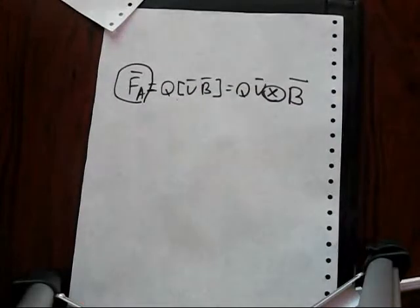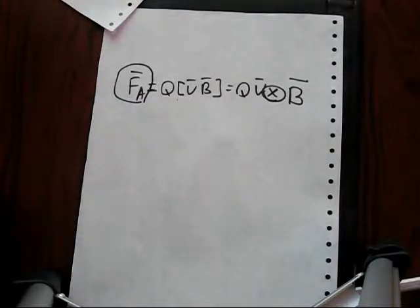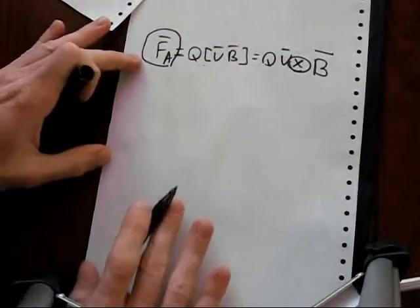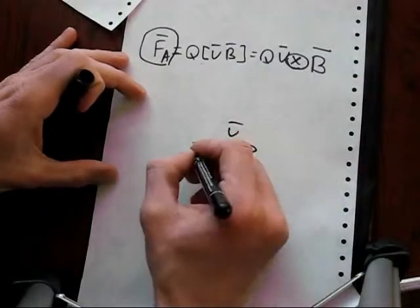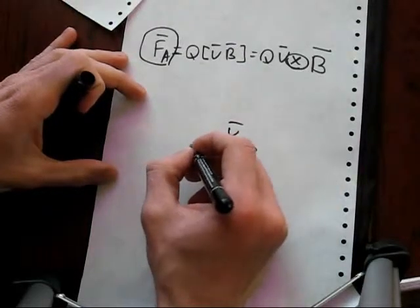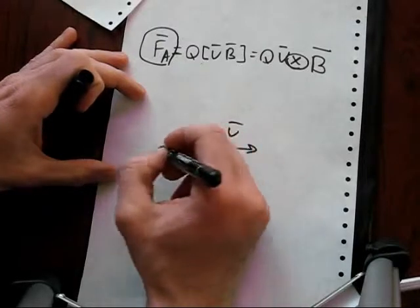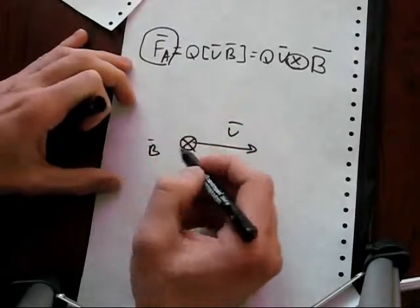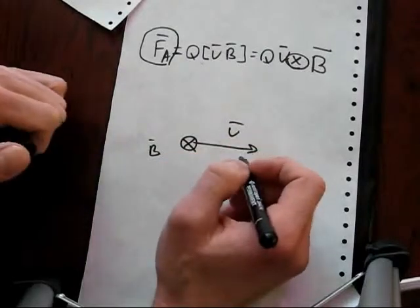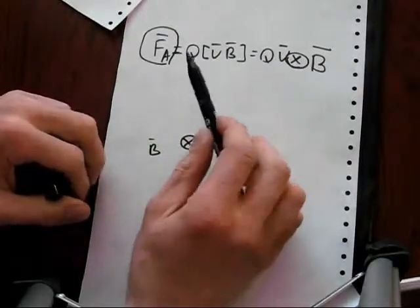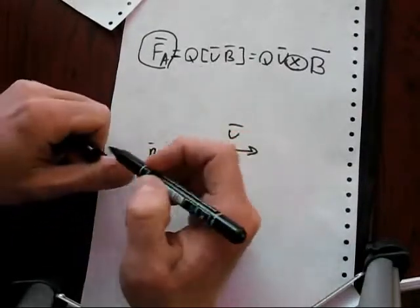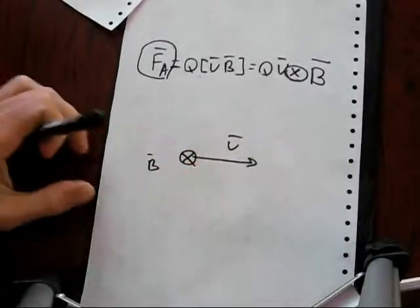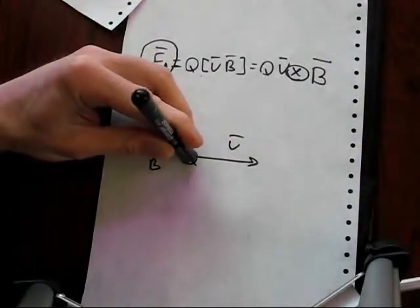And if I want to define this direction, I take the left hand. And for example, I have the following direction of vector V and vector B. It's absolutely random. It means that vector V belongs to the surface of this picture, of this image, and vector B is perpendicular to this surface.